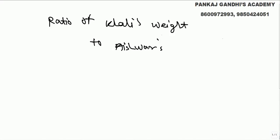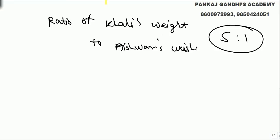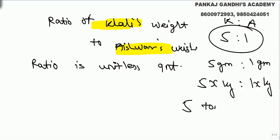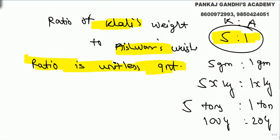If the ratio of Kali's weight to Aishwarya's weight is 5:1, ratio does not have units — it is a unitless quantity. It simply means if Kali is 5 grams, Aishwarya is 1 gram; if Kali is 5x kg, Aishwarya is 1x kg; if Kali is 5 tons, Aishwarya is 1 ton; if Kali is 100 kg, Aishwarya is 20 kg. Both have the same multiple, and their units must be the same, but units can be anything — grams, kg, tons.